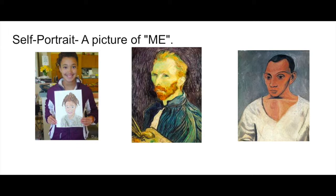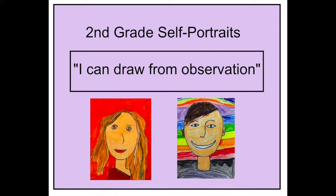The middle picture is a self-portrait done by an artist named Vincent van Gogh, and the one on the right is by a famous artist named Pablo Picasso. That's what he looked like. It's a self-portrait.